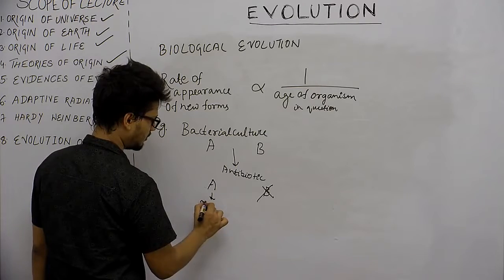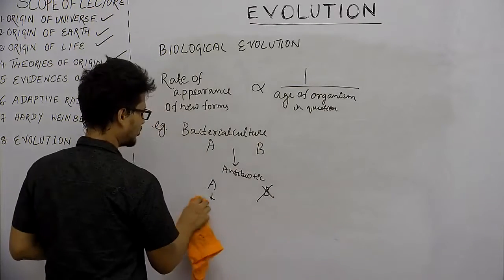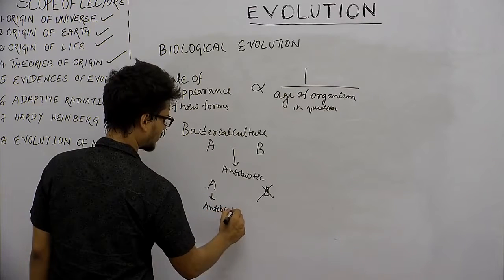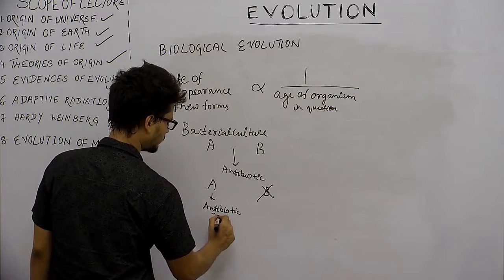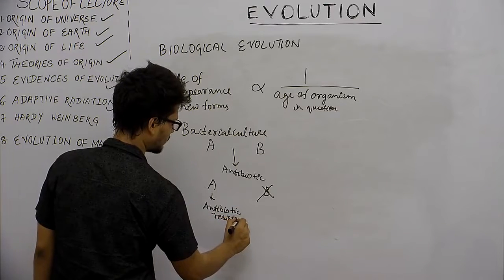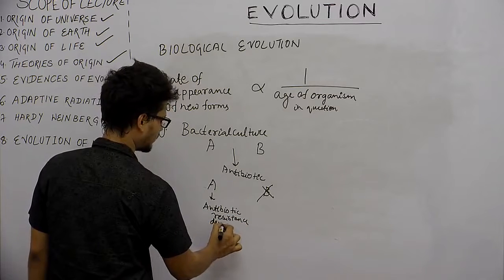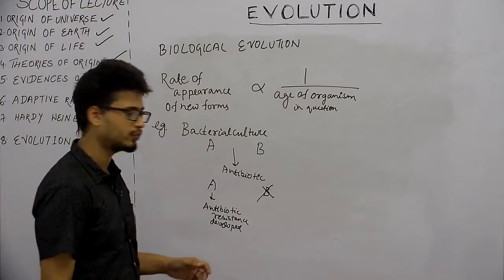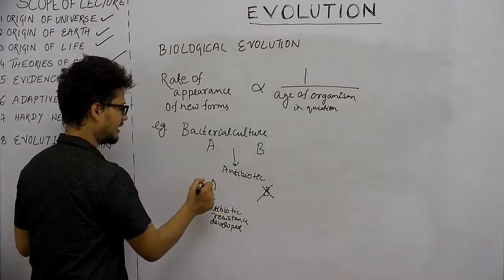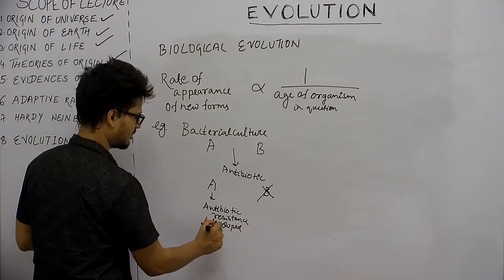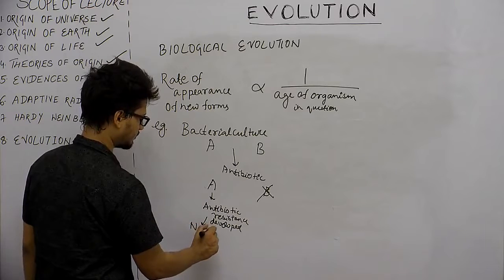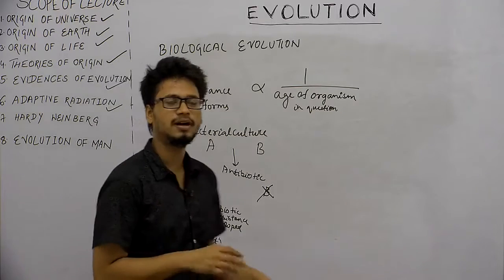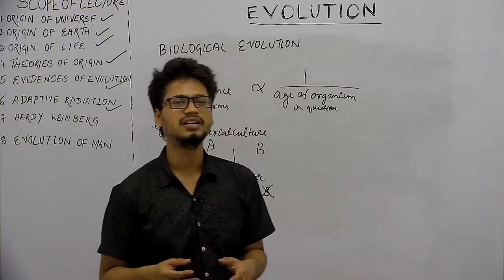The microbial colony of bacteria A developed antibiotic resistance and sent it to the next generation.